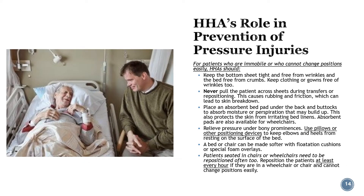For immobile patients or those who cannot change positions easily, HHAs should: keep the bottom sheet tight and free from wrinkles and the bed free from crumbs; keep clothing or gowns free of wrinkles; never pull the patient across sheets during transfers or repositioning, as rubbing and friction can lead to skin breakdown. Place an absorbent bed pad under the back and buttocks to absorb moisture; absorbent pads are also available for wheelchairs. Relieve pressure under bony prominences using pillows or positioning devices to keep elbows and heels from resting on the bed surface. Use flotation cushions or special foam overlays to soften a bed or chair. Reposition patients in wheelchairs at least every hour.